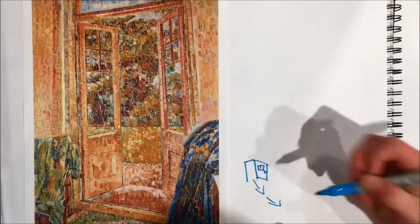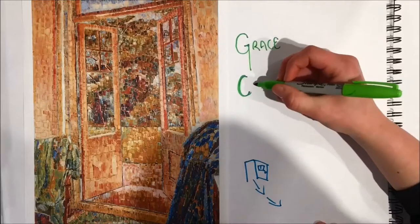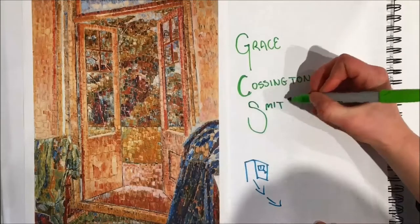The fifth and last form of art we will show you is called Open Doorway. It was painted by Grace Cosington Smith in 1960 and again is a 2D art form.